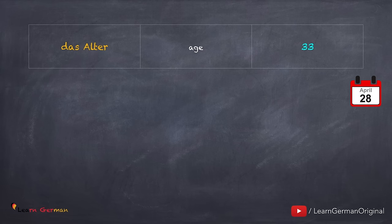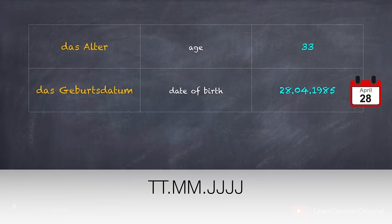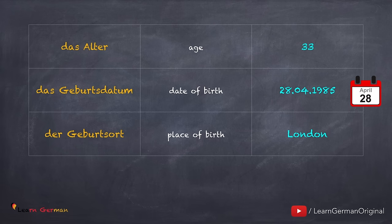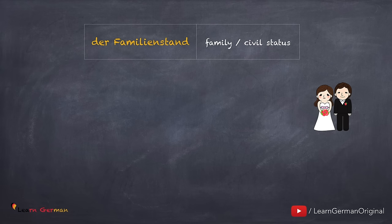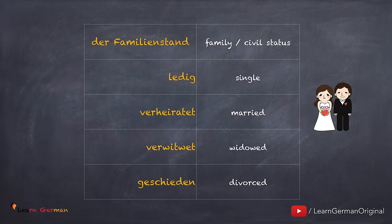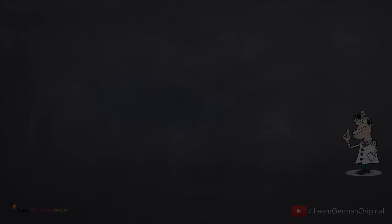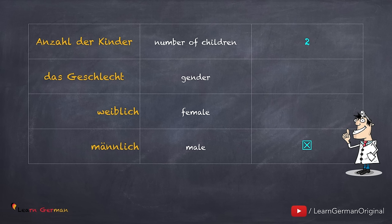Here are some more words. Das Alter — your age. Das Geburtsdatum — date of birth. In Germany, the date is written as day, then month, then year: Tag, Monat, Jahr. Then place of birth — der Geburtsort or das Geburtsland. Another field could be der Familienstand — marital status. Your answers could be ledig, verheiratet, verwitwet, or geschieden — single, married, widowed, or divorced. If you're married and have children, you could be asked about Anzahl der Kinder — number of children. Another field is das Geschlecht — gender: weiblich or männlich.